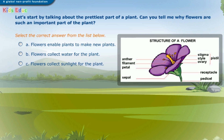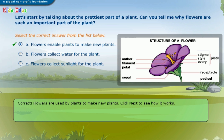Let's start by talking about the prettiest part of a plant. Can you tell me why flowers are such an important part of the plant? Select the correct answer from the list below. A. Flowers enable plants to make new plants. B. Flowers collect water for the plant. C. Flowers collect sunlight for the plant. Correct — flowers are used by plants to make new plants.